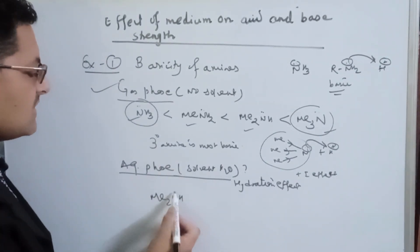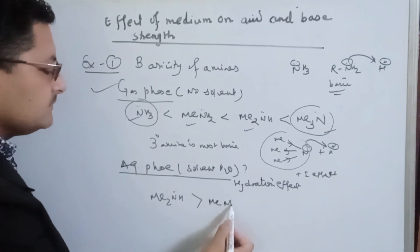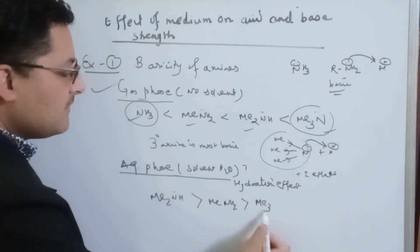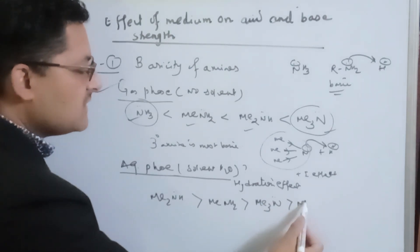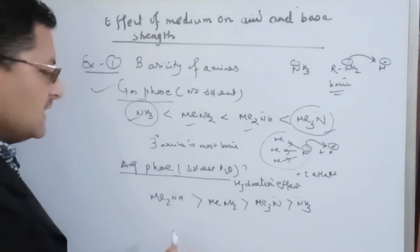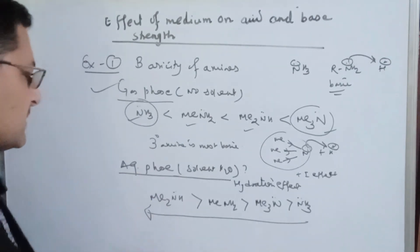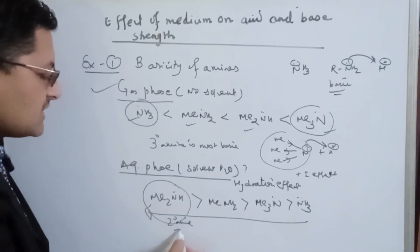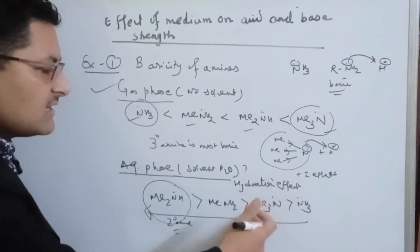In the aqueous phase, the basicity order is: dimethylamine (secondary amine) is most basic, then methylamine (primary amine), then trimethylamine (tertiary amine), and ammonia is the least basic. So secondary amine is the strongest base, while ammonia is very weakly basic.